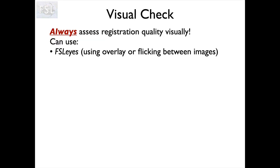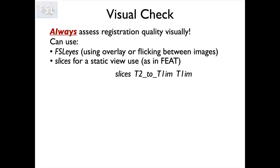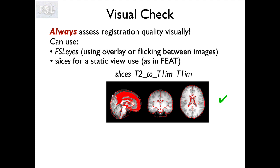A visual check can be done in several different ways. One is to use viewers such as FSLeyes or fslview, and flick between different images or overlay them. That's probably the most powerful way. But often there are even quicker ways — if you've got lots of images to check, a static view is useful. There's a little tool within FSL called Slicers, and this is also what you'll be presented with as web page outputs from tools such as FEAT, our main fMRI analysis tool.